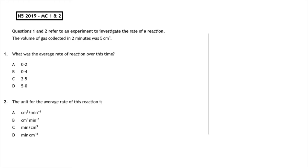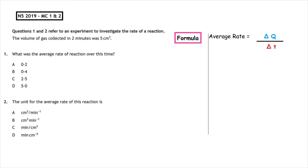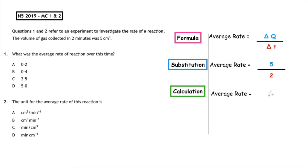This past paper question is from National 5, 2019, multiple choice questions one and two. Questions one and two refer to an experiment to investigate the rate of a reaction, and the volume of gas collected in two minutes was five centimetres cubed. Question one asks: what is the average rate of reaction? We write out the formula: average rate is equal to change in quantity over change in time. The time interval given was two minutes and the quantity was five. Five divided by two gives us 2.5, so the correct answer is multiple choice answer C.